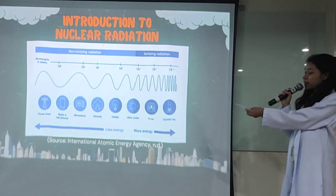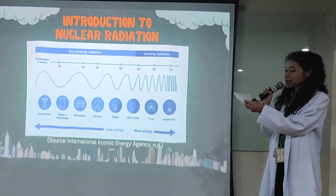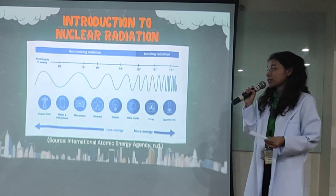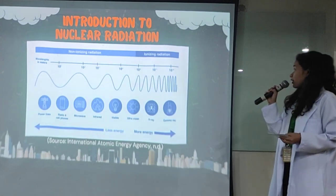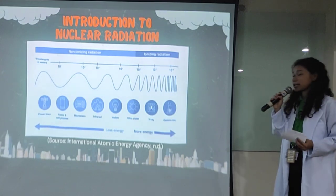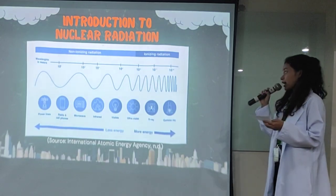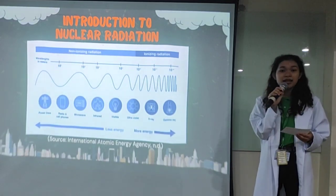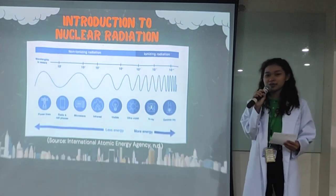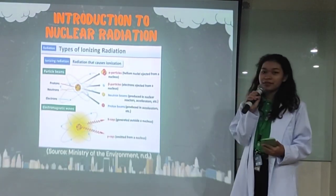In the electromagnetic spectrum, non-ionizing radiation includes visible light, infrared, microwave, radio and cell phones. On the other hand, ionizing radiation includes ultraviolet, x-ray, and gamma ray. We must keep in mind that ionizing radiation is the type of radiation we must be wary of, because too much exposure to it can be detrimental to our health. In this seminar, we will focus on ionizing radiation.